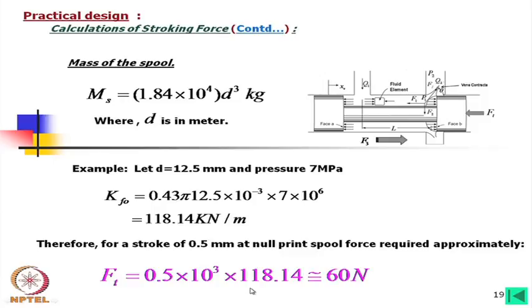For a 12.5 mm diameter spool at steady state, the required force is approximately 60 N, which is about 6 kg force. This is neither very small nor very large. Usually an electric drive — such as a solenoid or electrical torque motor — must generate this 60 N force. With this knowledge, today's lecture concludes, and we will continue this analysis in the next lecture.